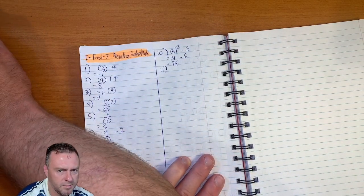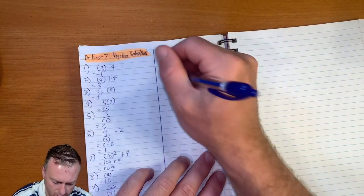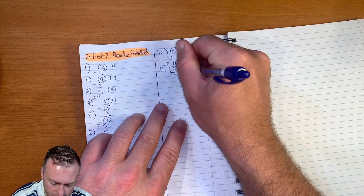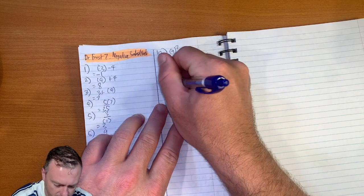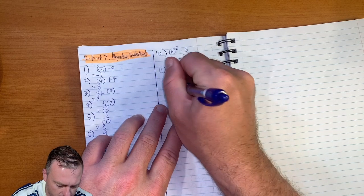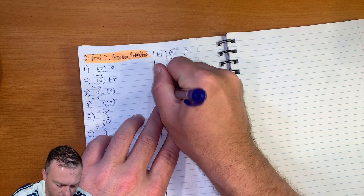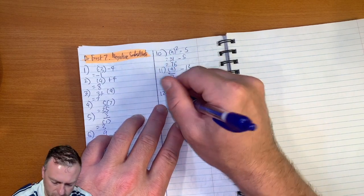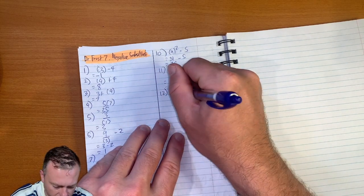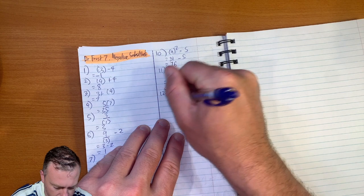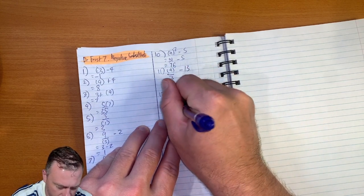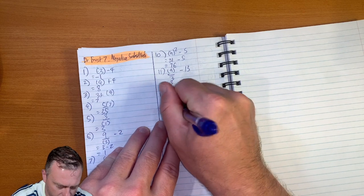Question eleven. We've got nine divided by three, minus thirteen, so equals three minus thirteen, which equals negative ten. Question twelve. We're subbing in fifteen into z, dividing it by five, and adding five, so that's three plus five, which then equals eight.